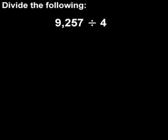To divide 9,257 by 4, first set up the problem using a division symbol, with 4 on the outside and 9,257 on the inside. So 9,257 divided by 4 can be rewritten as 4 divided into 9,257.